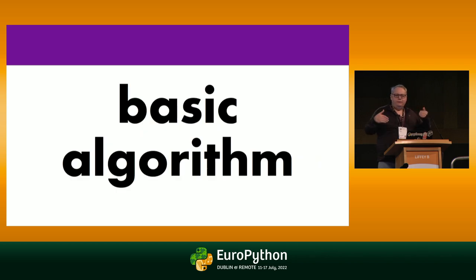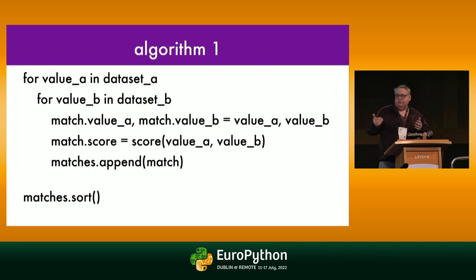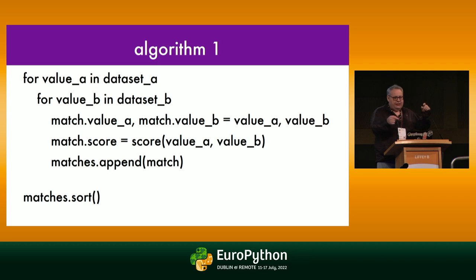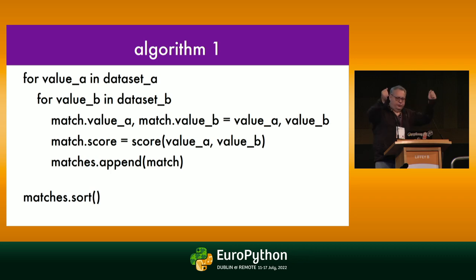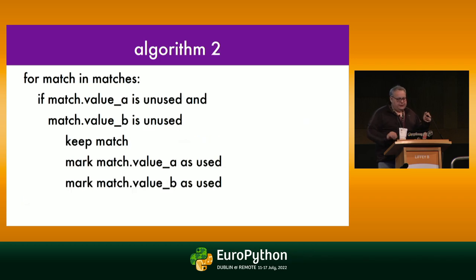Now let's look at the basic algorithm of how Correlate does its work. You feed in all your data and call Correlate. Correlate iterates over every value in dataset A and compares it to every value in dataset B, looks at all the keys they have in common, and computes a score. It takes that match object and adds it to a list, then sorts that list by score.